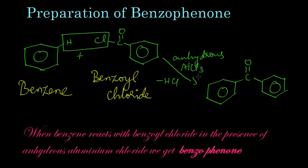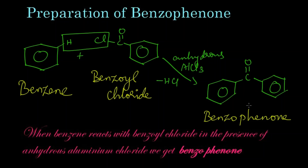To summarize: benzene reacts with benzoyl chloride in the presence of anhydrous aluminium chloride, HCl is eliminated, and we get benzophenone as the product. Thank you.